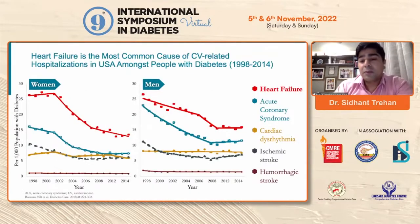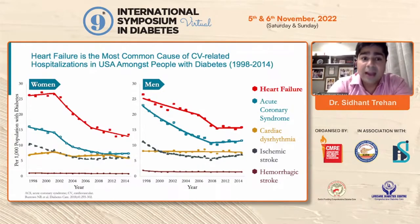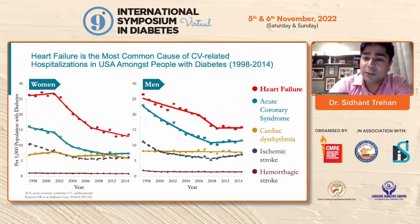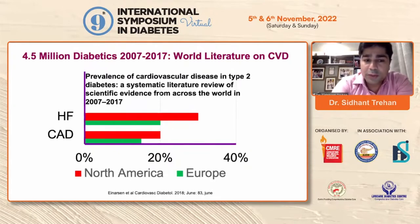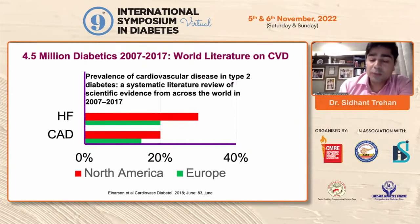We usually think of heart failure as more common in men and slightly less in women, but it is relatively similar and heart failure is definitely the most common cause of cardiovascular-related hospitalization, in both men and women. Even though the substrate is slightly different — men tend to present with reduced ejection fraction more, whereas women tend to present more with preserved ejection fraction. A systematic review on prevalence of cardiovascular disease in type 2 diabetics showed that heart failure is seen in approximately 30% of patients in America, and coronary artery disease in about 20% of diabetics.